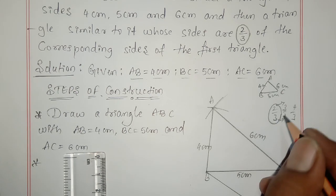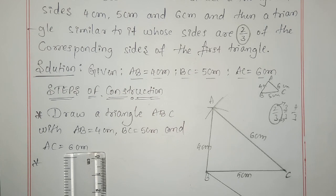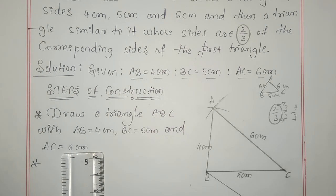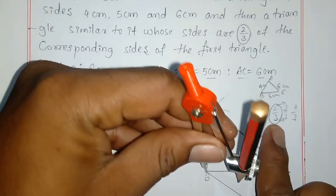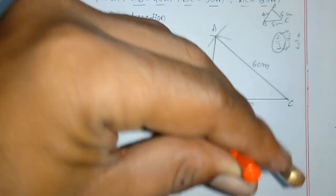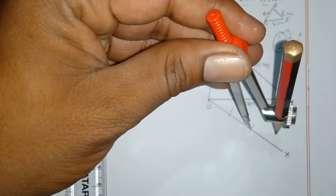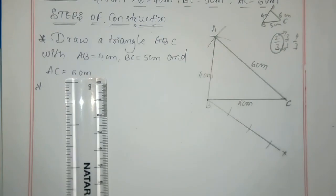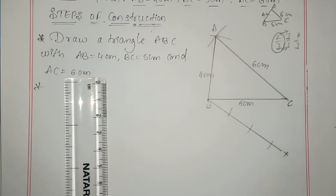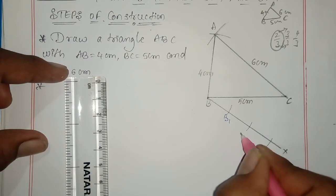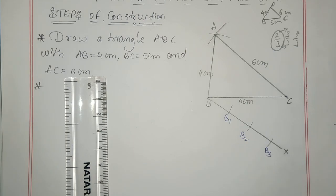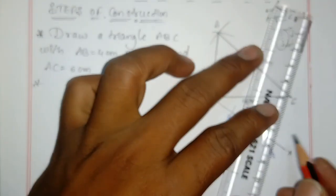From B point, draw three points — B1, B2, and B3 — because the denominator is three, which is the greater digit. Construct three points: one, two, three, called B1, B2, and B3. Next, join B3 to C.